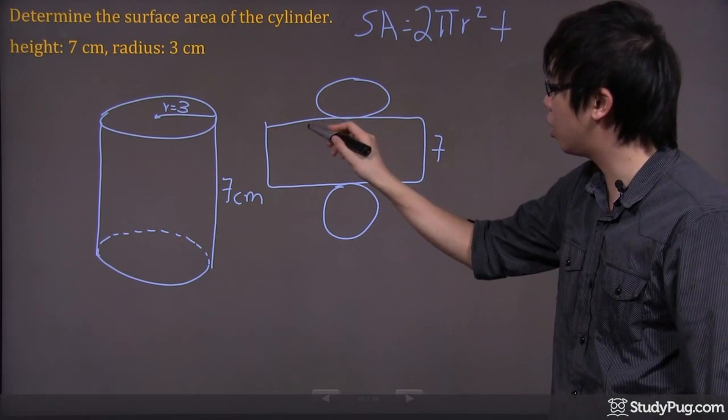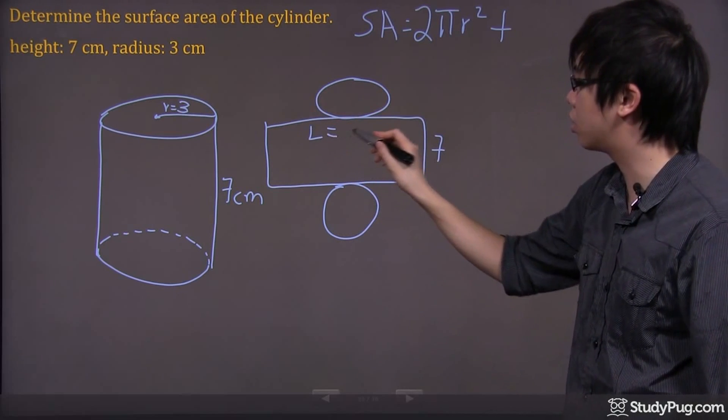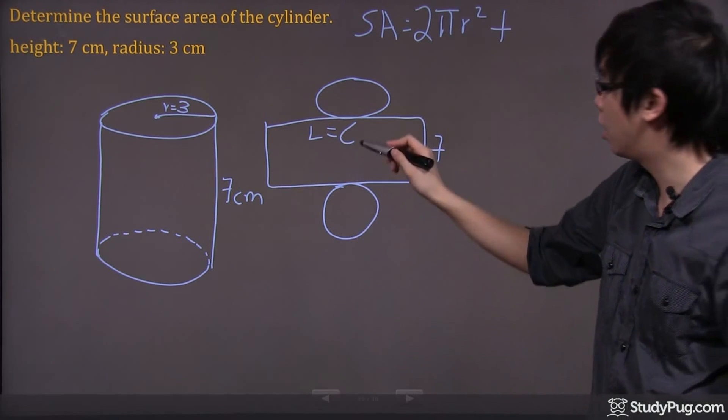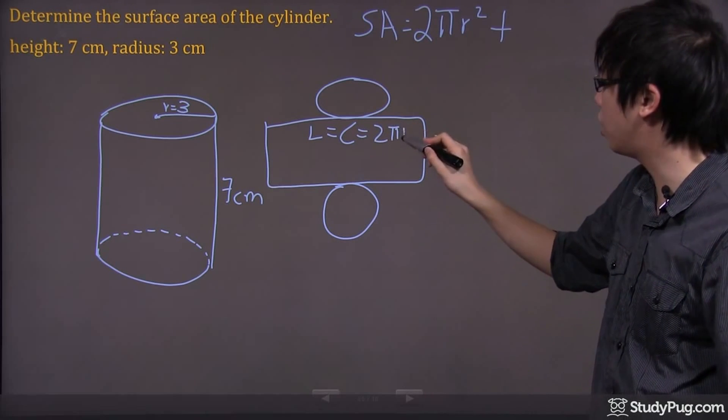The length over here, I'll write that down, is actually just the circumference, which is C. And C equals 2 pi r.